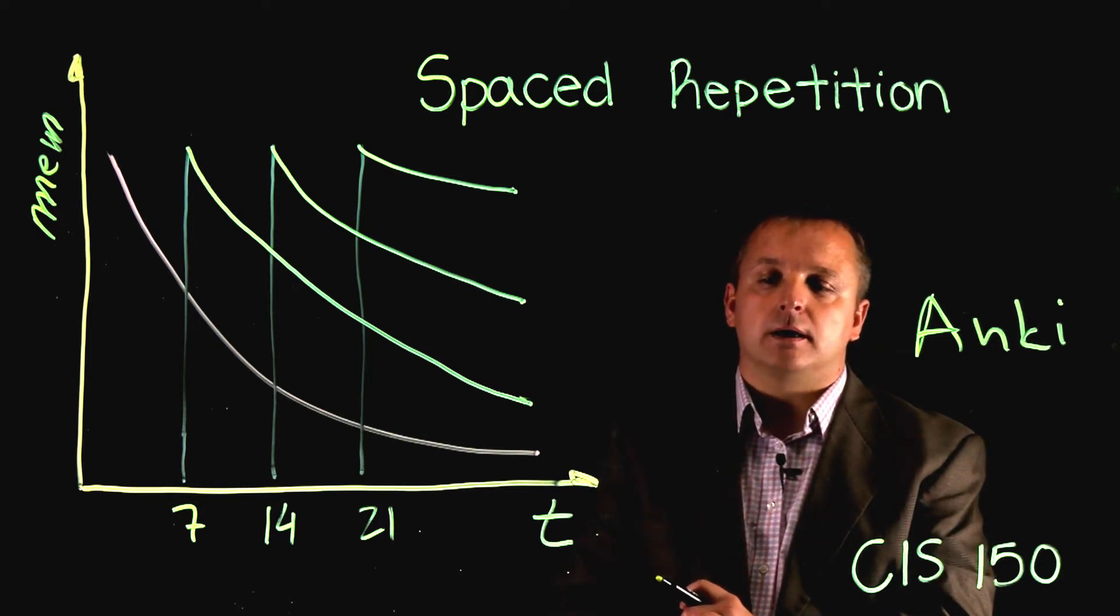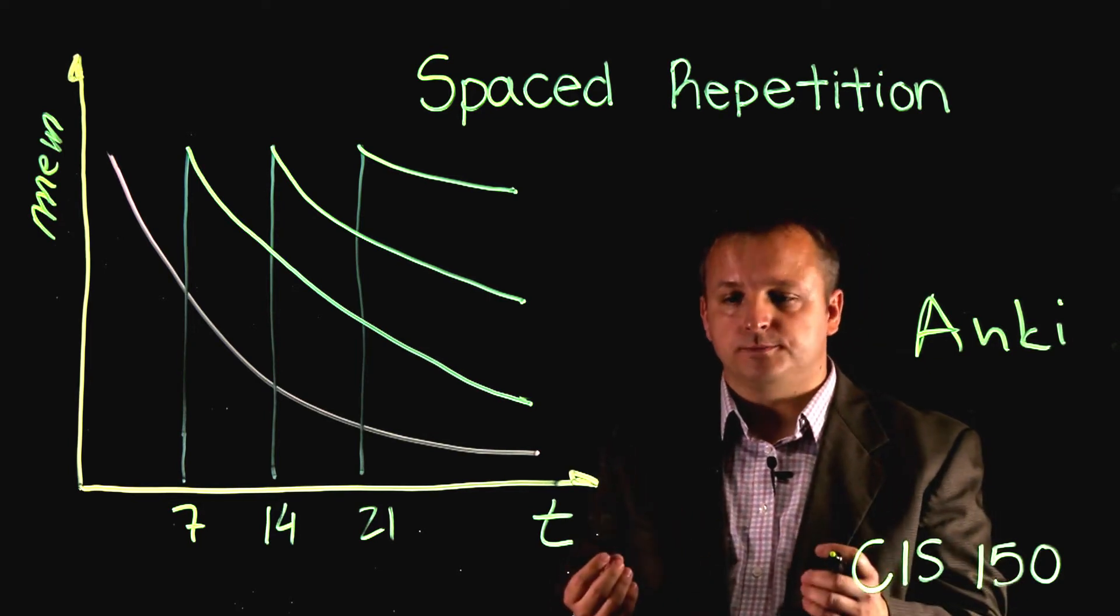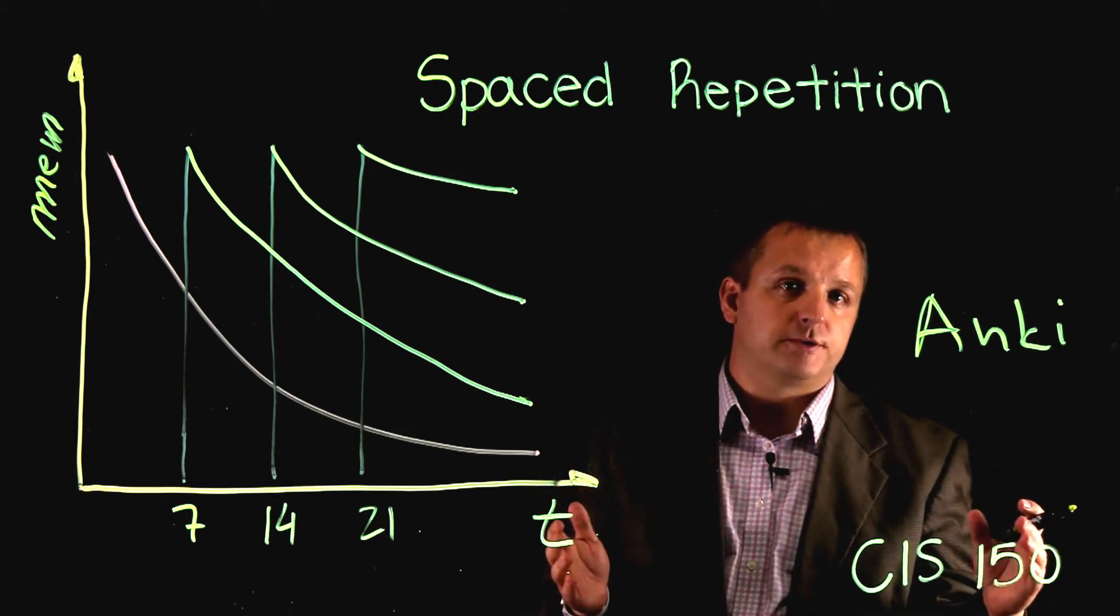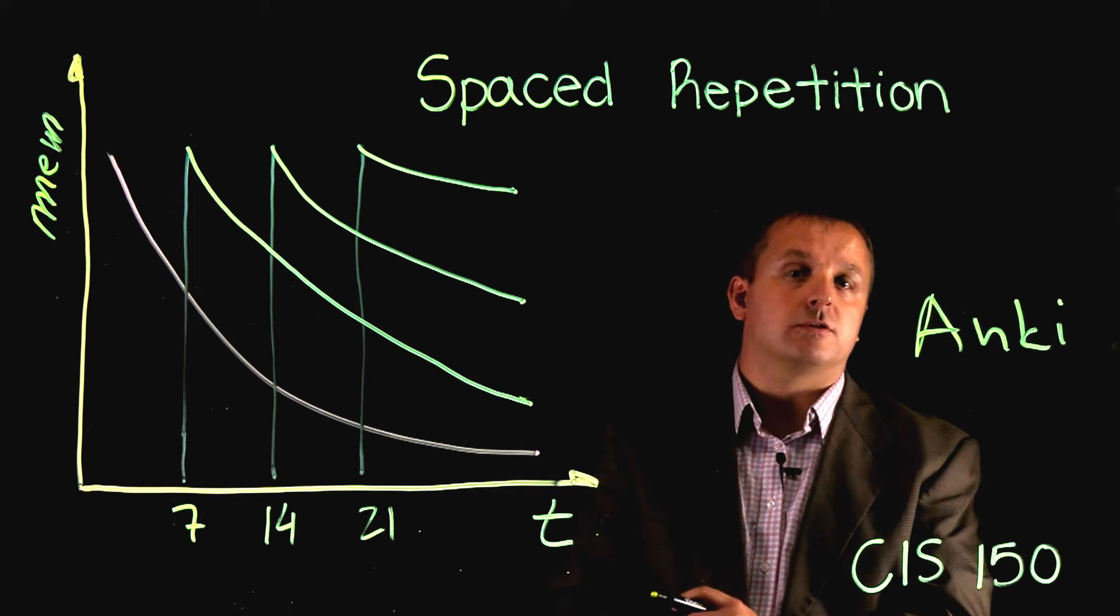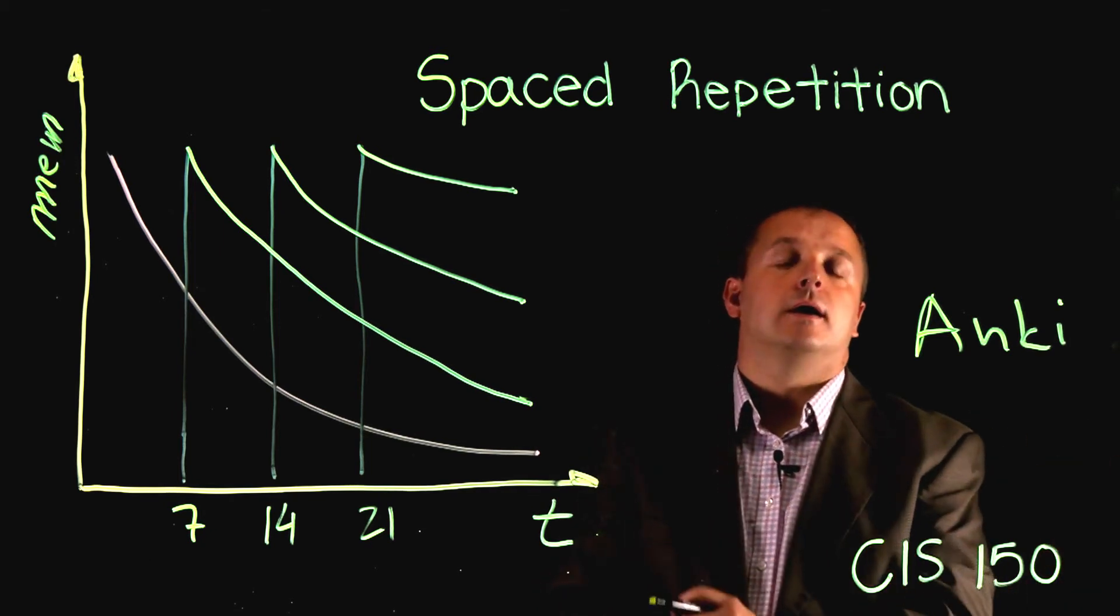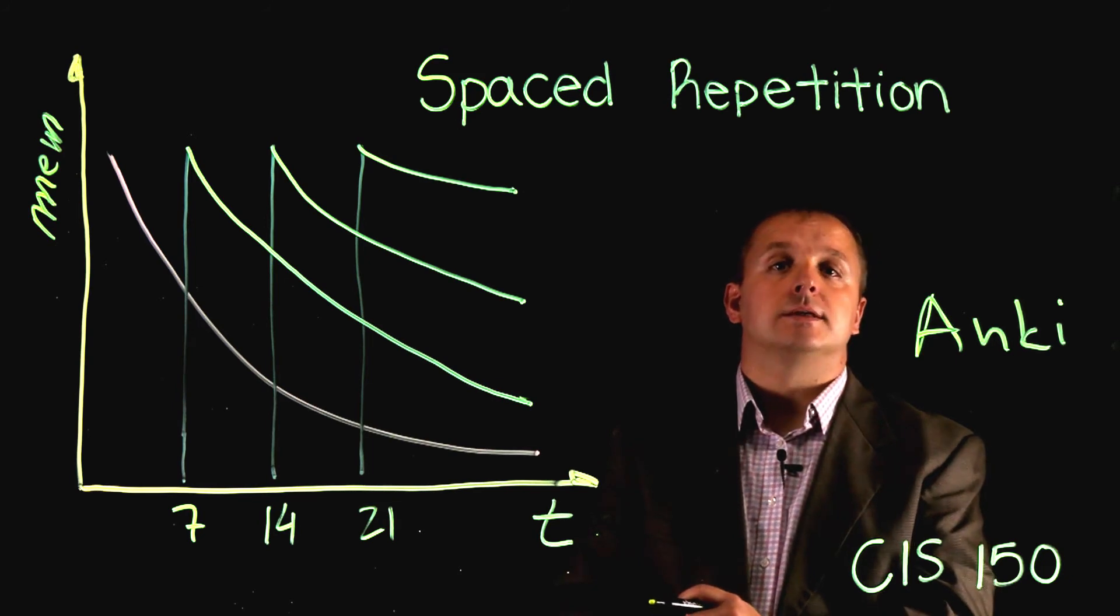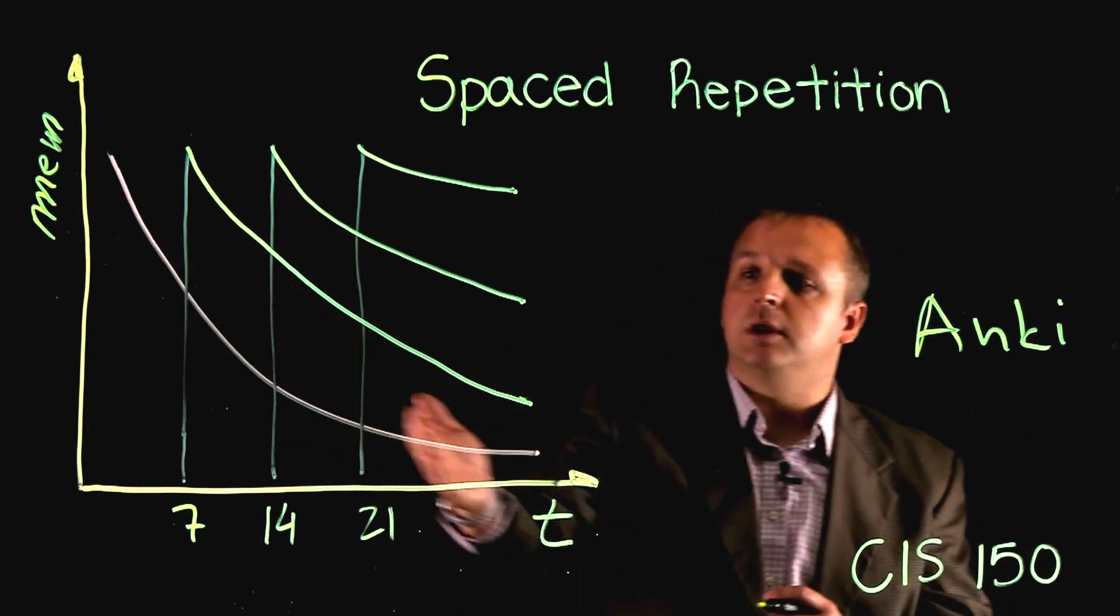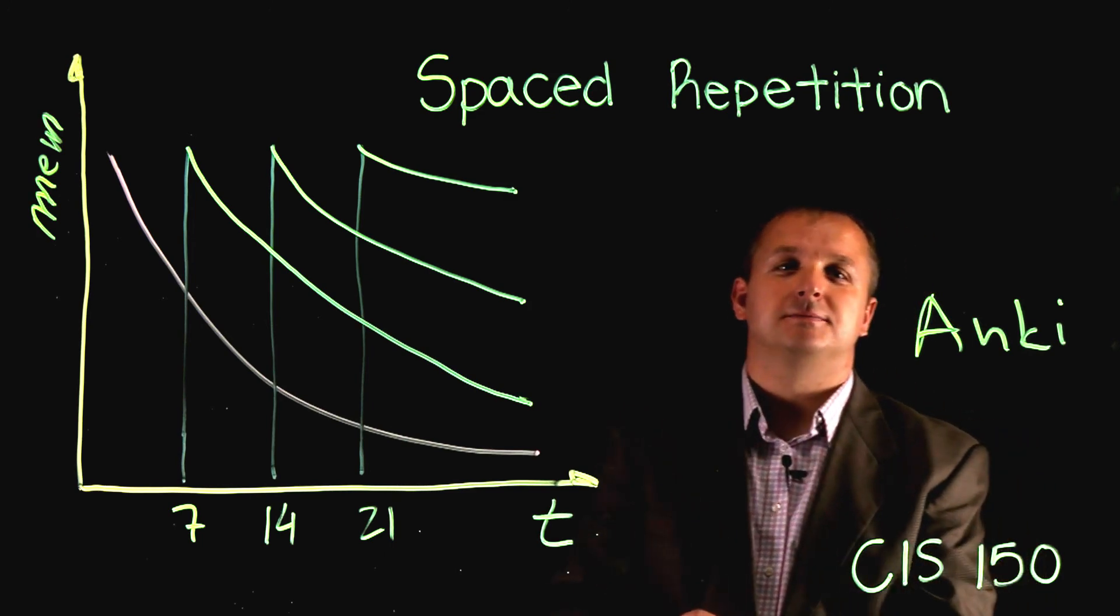It so happens that when the brain has to work harder to learn something, it is going to remember it for a longer period of time, and that is the goal of spaced repetition in that you have to recall something you have already learned, and this helps you to mitigate what the curve of forgetting does. Thank you.